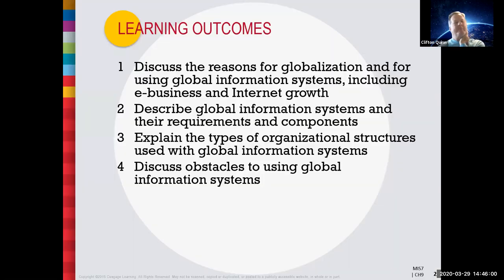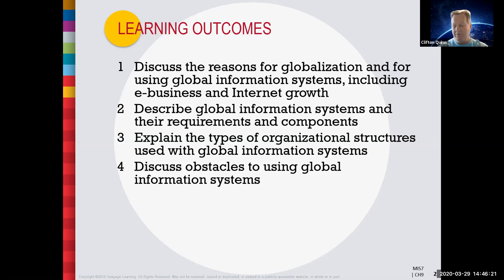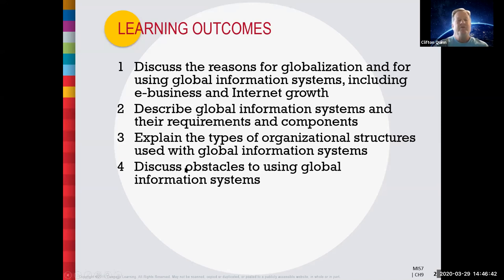So what we're going to look at in this chapter are some of these learning outcomes. Why global? For a lot of Americans, we don't really think so much about the world — where our products come from, where they go to, and why products are shipping all around the world. We'll look at information systems for global business, including e-business and the internet. We'll look at requirements, components, organizational structures, and — hugely — what are some of the obstacles and risks? A lot of us know about the benefits, but what about things that can go wrong?